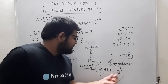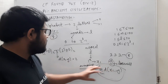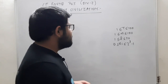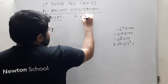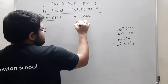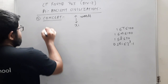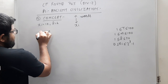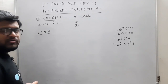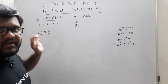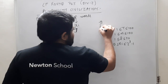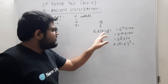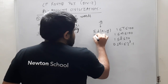Toh ab concept ki baat karte hain. Hume N numbers diye gaye hain — matlab N words diye gaye hain integer ke form mein — ek word ke N different forms. For example, agar xi ki value 10 aur length 6 hai, toh 10 binary mein 001010 hoga (8+2), aur total 6 bits ka word hoga. Hume ek y number find karna hai such that summation of distance between xi and y — sabhi N numbers ke beech ka individual distance y ke saath — uska summation minimum ho.